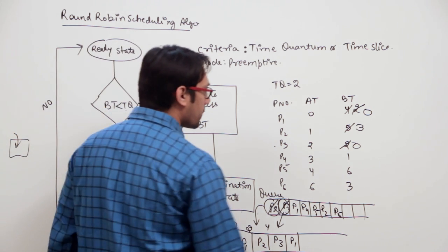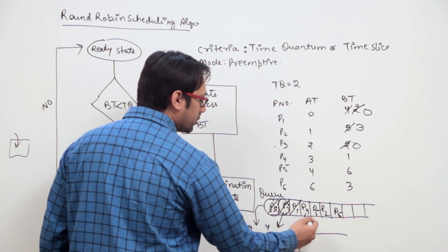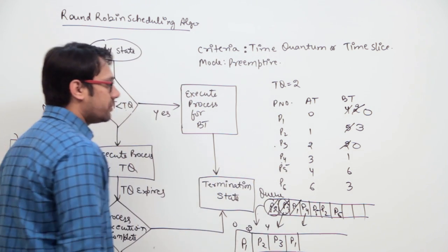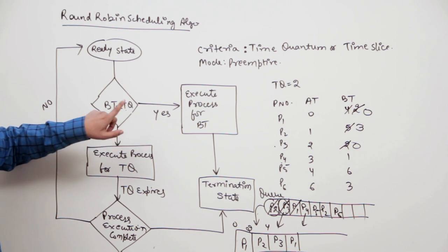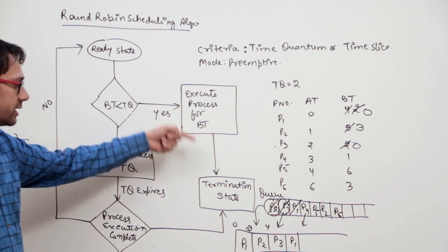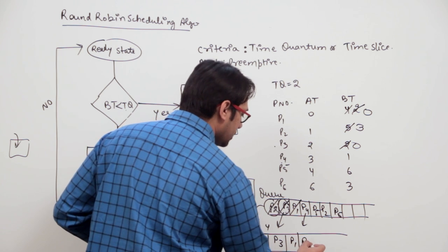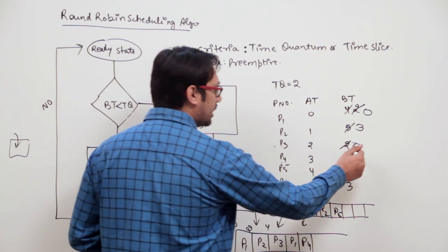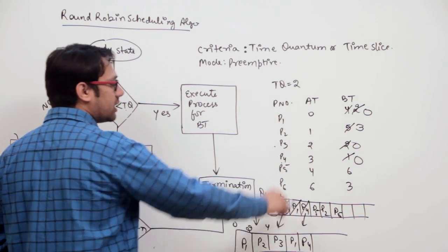The next process is P4. The burst time of P4 is 1, which is less than the time quantum, so we execute P4 for its burst time. P4 will execute until time unit 9 and its burst time becomes 0, so we do not put it back in the ready queue — it goes to the termination state.